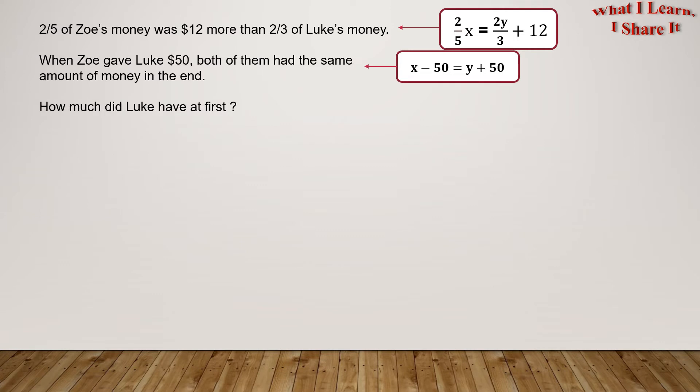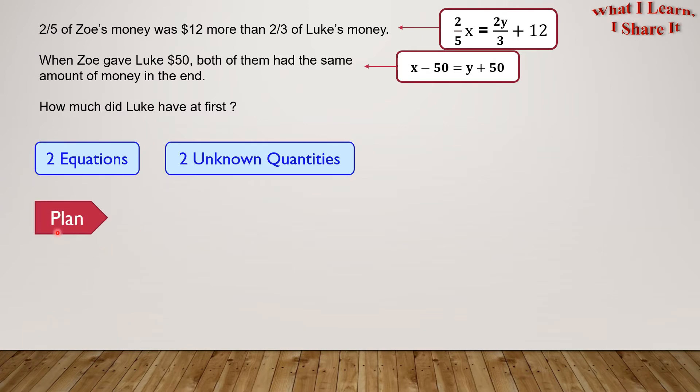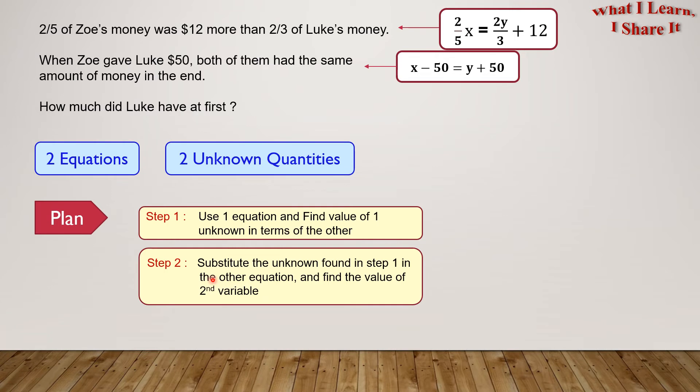How much did Luke have at first? We have to find Y. We have two equations and two unknown quantities, X and Y. So, here's our plan. Step 1: We'll use one equation and find the value of one unknown in terms of another. And Step 2: Substitute the unknown found in Step 1 in the other equation and find the value of the second variable.